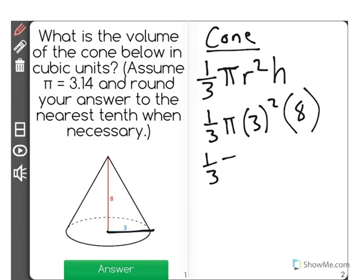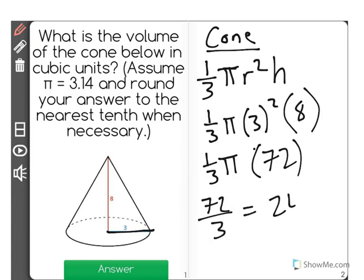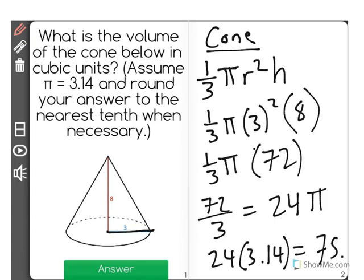And when I continue working with this, I have 1/3 times 9 times 8, which is 72. When I do 72 over 3, I could simplify that to equal 24, so I have 24 pi. And when I multiply 24 times 3.14, I get a total volume of 75.36 cubic units.